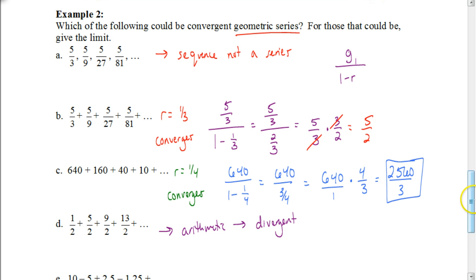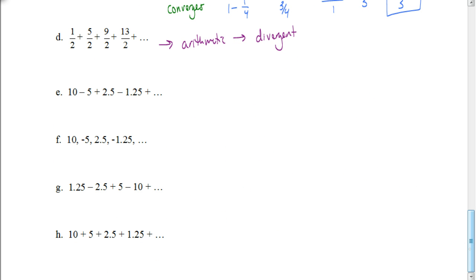Now try some of these on your own. Pause the video and try examples e, g, and h. Remember: the next example shown has commas instead of pluses, so it's a sequence, not a series. For the others, first determine if it's arithmetic or geometric. If geometric, check if R is between negative 1 and 1, and if so, use the formula g₁/(1−r) to find the limit. Hit play when you're ready to check your answers.